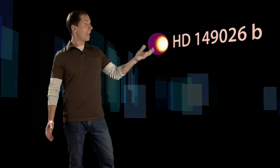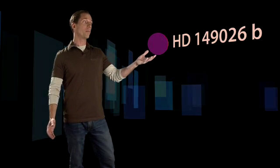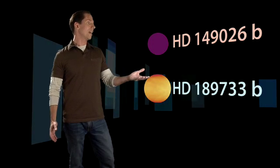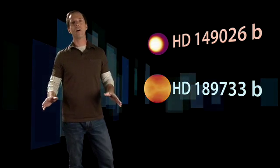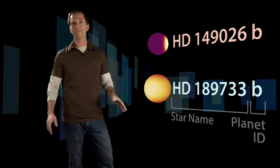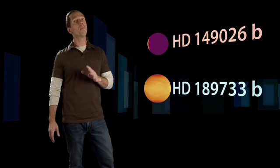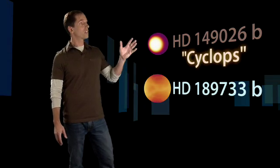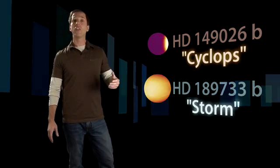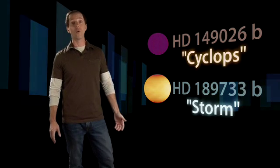Their official names, HD 149026b and HD 189733b, are based on the catalog numbers of their host stars. Personally, I'm going to call them something unofficial but easier to remember: Cyclops and Storm, the hottest and windiest known planets.